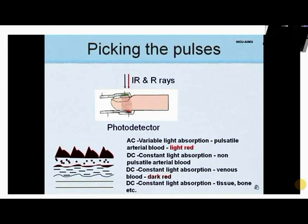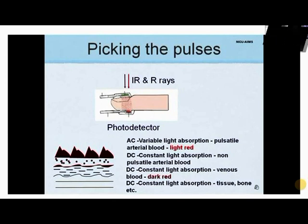Scatter, reflection, and absorbance of light by other tissues and blood components could confound the values. This is solved by the pulsatile nature of arterial blood, which increases the path length, thereby increasing the absorbance. Other tissues, being static, do not contribute to the reading.